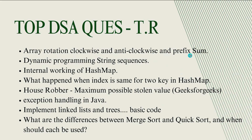Array rotation — clockwise and anticlockwise — and prefix sum are the most repeating and most important questions. Dynamic programming on string sequences, and internal working of HashMap. They are asking: what is HashMap, where do you use it, what is the internal working, how do you define it in a problem, and write a pseudo code on it. They give a scenario where you can use HashMap. Be well prepared on HashMaps. Also: what happens when the index is the same for two keys in a HashMap? Then a collision occurs — how do you overcome it?